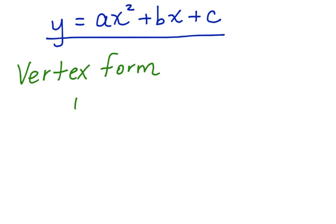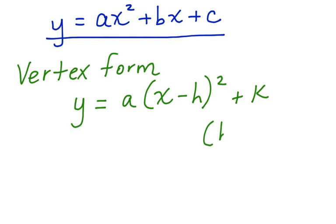Vertex form is as follows: y equals a times x minus h squared plus k. And in this equation, h k is the vertex, and a is the leading coefficient.